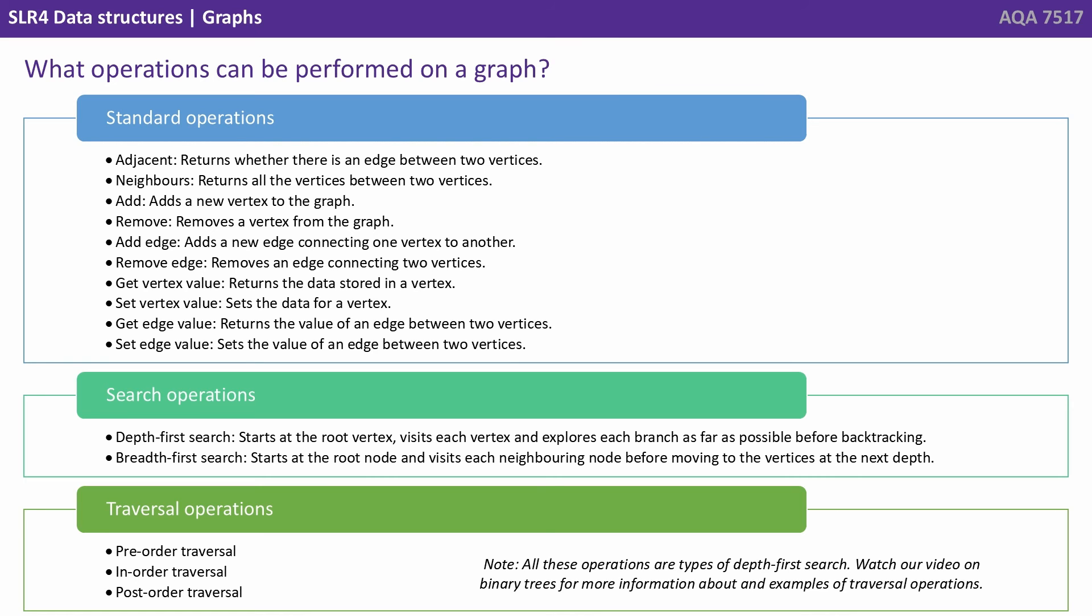There are also search operations you can perform on a graph. There's depth first search and breadth first search, and we'll look at these in more detail in later videos. And there are also various traversal operations: pre-order traversal, in-order traversal and post-order traversal. And again we've got videos on these later on.